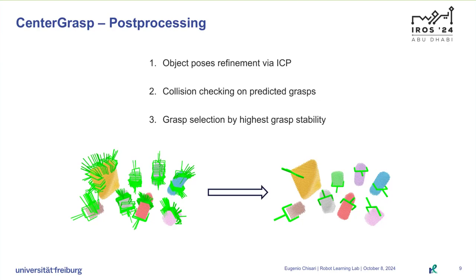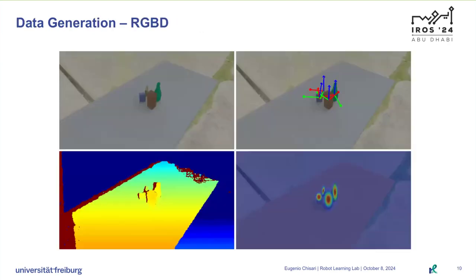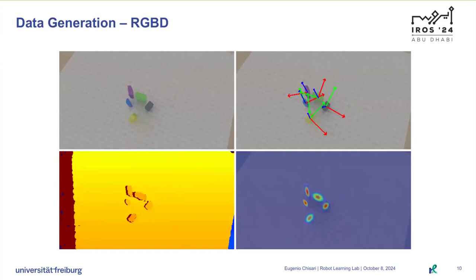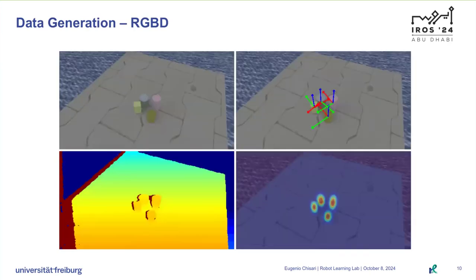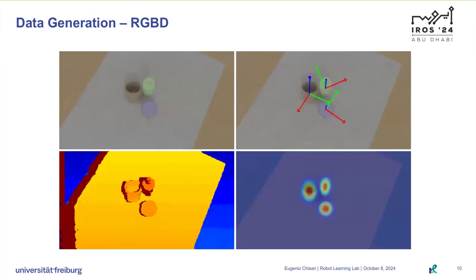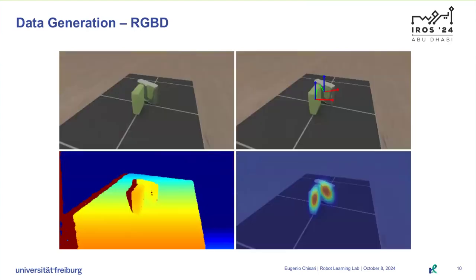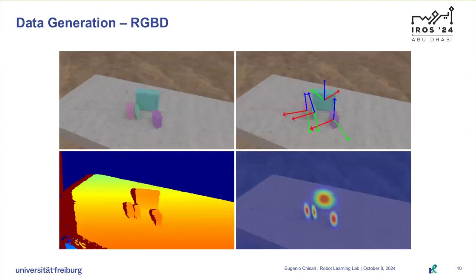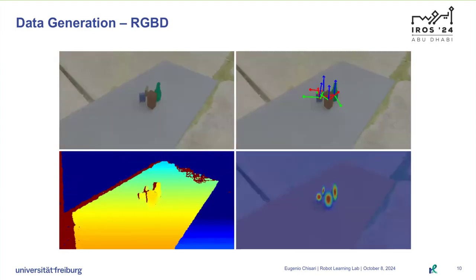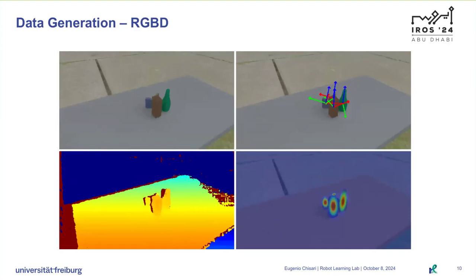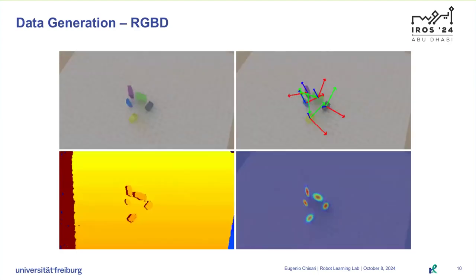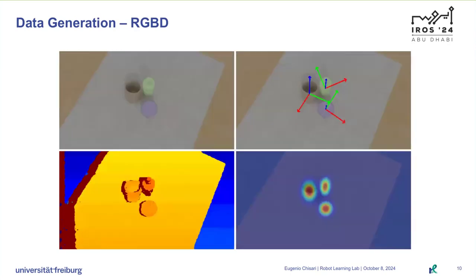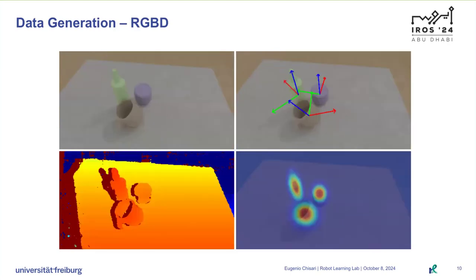Looking now at our data generation pipeline, CenterGrasp is trained solely on synthetic data and achieves zero-shot generalization to the real world. To generate synthetic image observations — RGB and depth — as well as pose and instance segmentation labels, we use the ray tracing-based renderer from the Sapien simulator and its realistic depth feature. All textures, materials, lights, and table shapes are randomized. To generate the object heatmaps, whose peaks represent each object in the image, we fit a Gaussian to the ground truth instance masks. We render each scene from two random camera poses, resulting in roughly 200,000 RGBD images and labels.